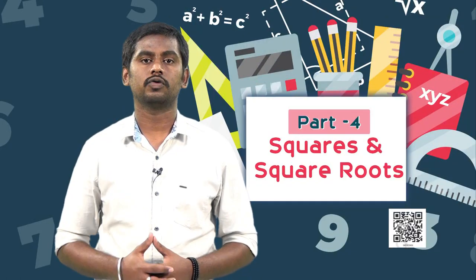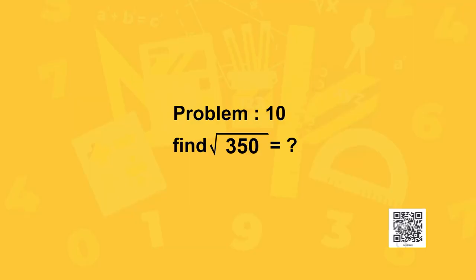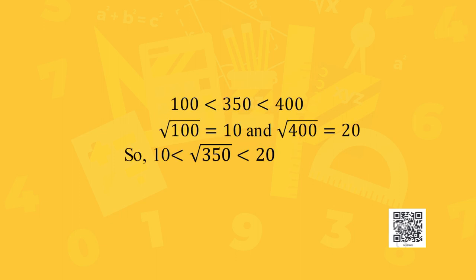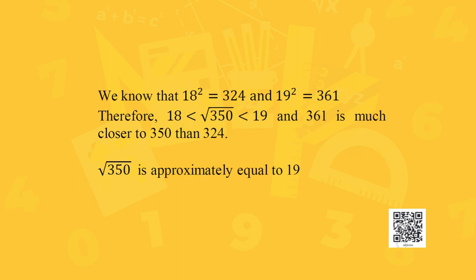Similarly, let us estimate the square root of 350. We know 100 < 350 < 400, so 10 < √350 < 20. More precisely, 18² = 324 and 19² = 361. So 18 < √350 < 19, and since 361 is much closer to 350 than 324, the square root of 350 is approximately equal to 19.